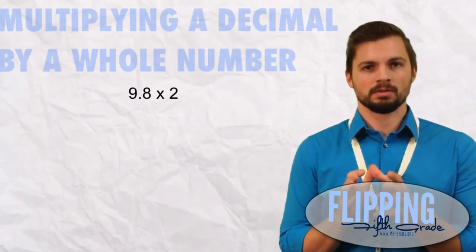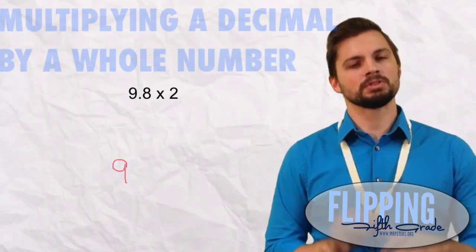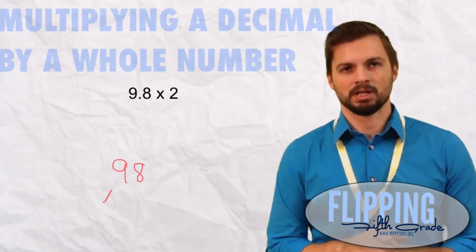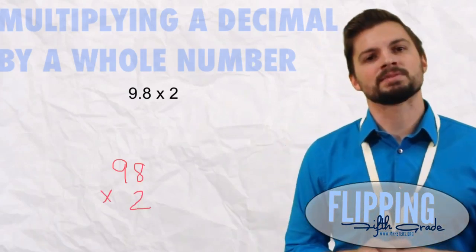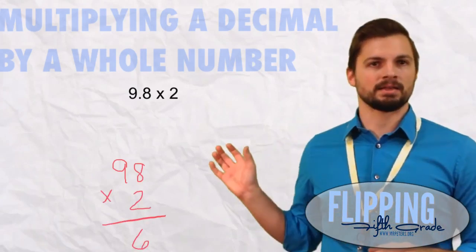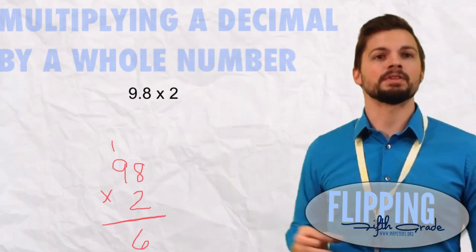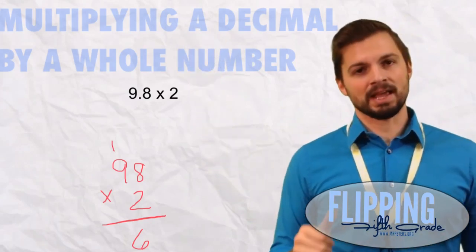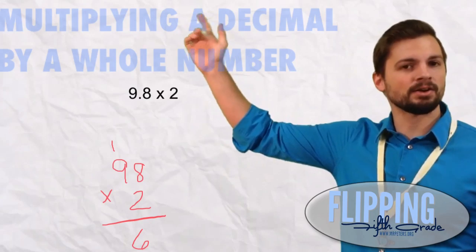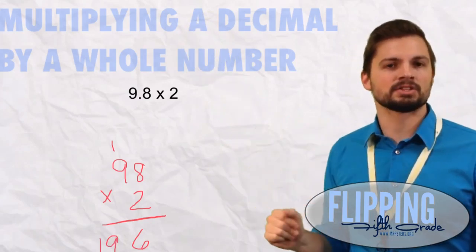Let's imagine that we're not dealing with decimals at all and we're just doing 98 times 2. Let's do the problem. 2 times 8 is 16. I carry that 1 from the tens place up above the 9. 9 times 2 is 18 plus that 1 that we carried over is 19. So we get an answer of 196.